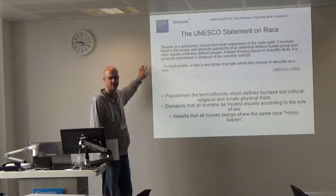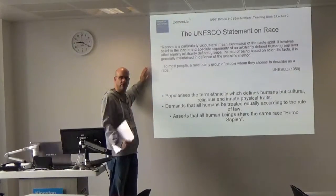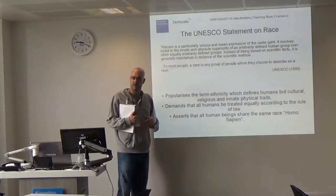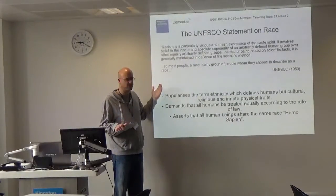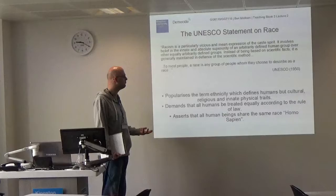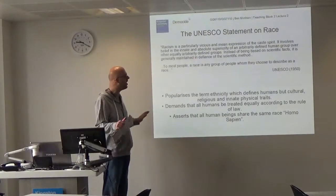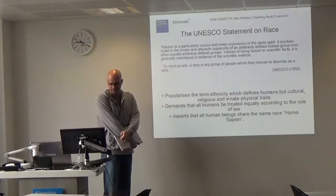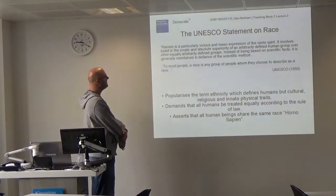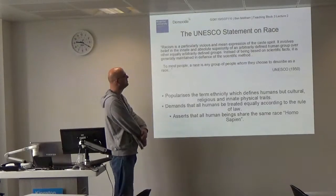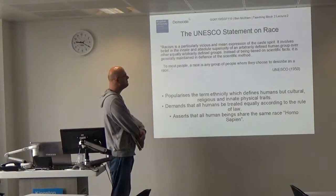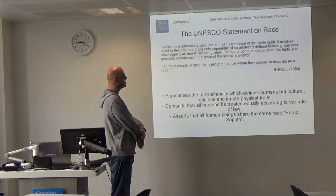UNESCO was formed around 1948 and they got a big conference together — all of the biggest anthropologists, biologists, and sociologists in the world — to come together in the aftermath of the Second World War to discuss this idea of race and whether there was any backing to it. This is what they had to say: 'Racism is a particularly vicious and mean expression of the caste spirit. It involves belief in the innate and absolute superiority of an arbitrarily defined human group over another equally arbitrarily defined human group. Instead of being based on scientific facts, it is generally maintained in defiance of the scientific method.'